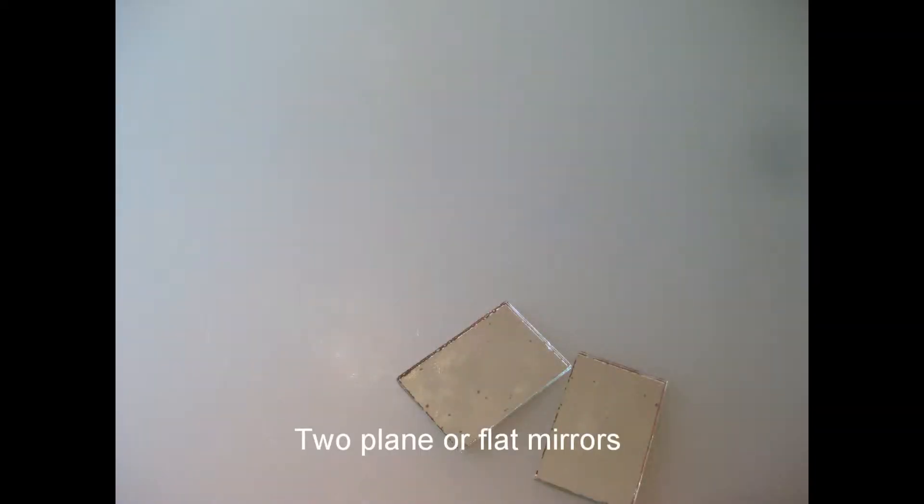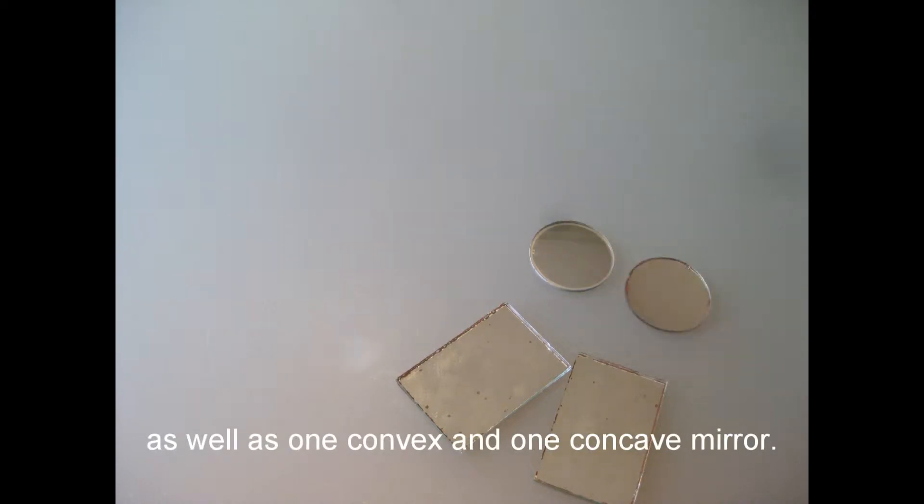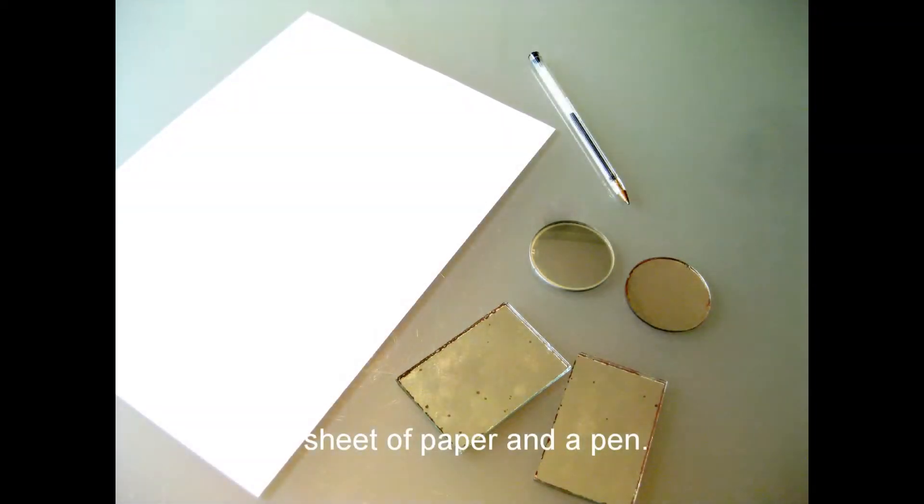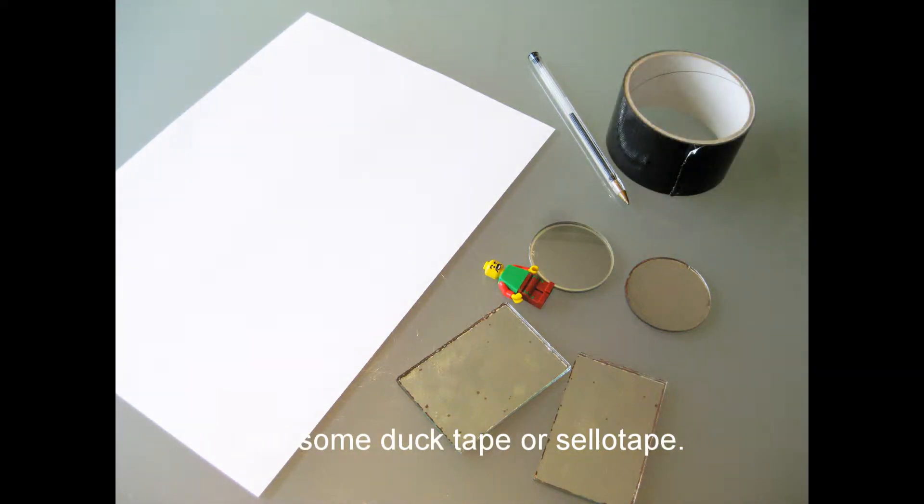You'll need to gather the following items for this activity: two plain or flat mirrors, as well as one convex and one concave mirror, a sheet of paper and a pen, a small object such as a Lego man, and some duct tape or sellotape.